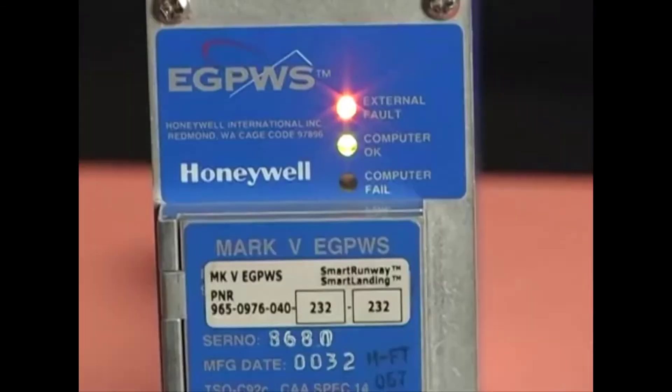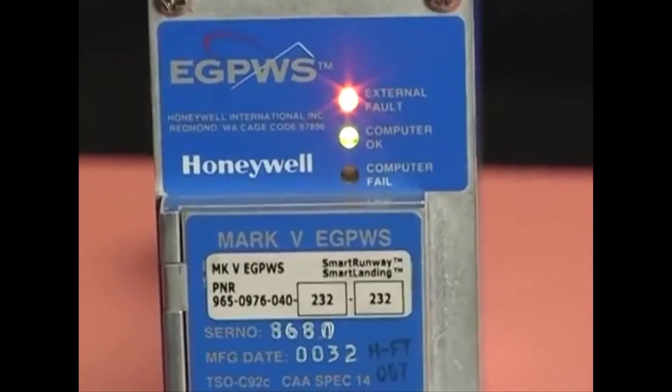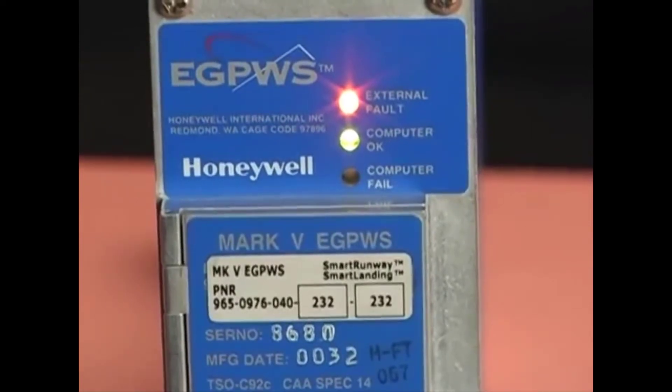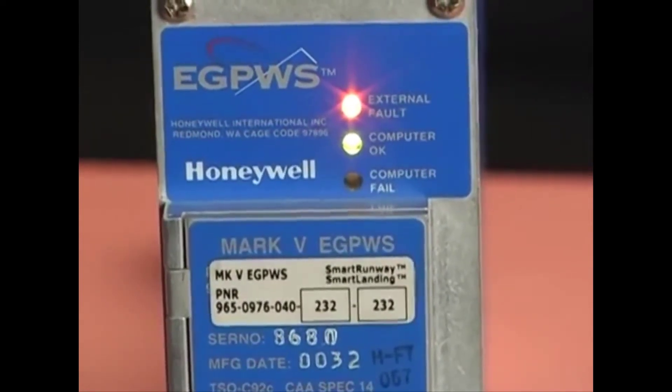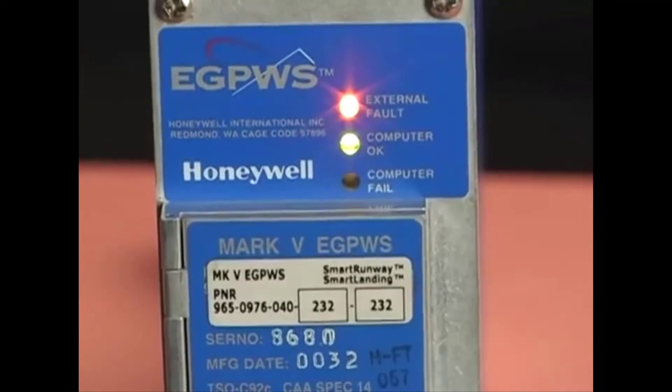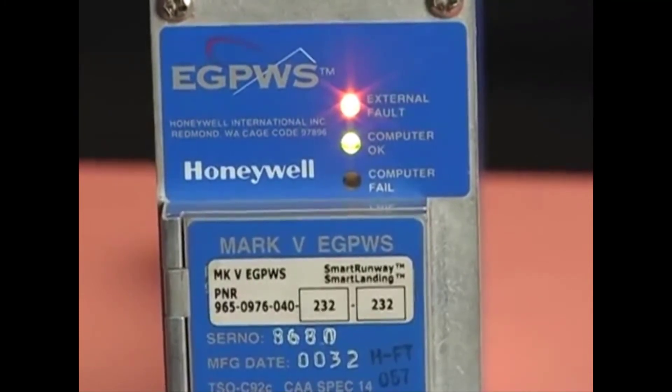Troubleshooting begins with the three LED status indicators on the front panel of the Enhanced Ground Proximity Warning computer. The green Computer OK LED indicates that the eGPWC is operating correctly.